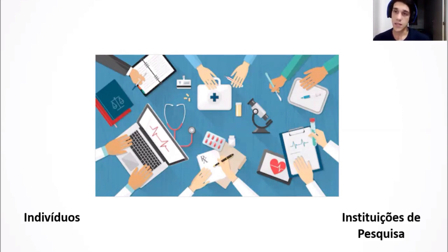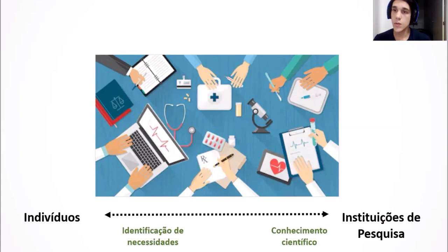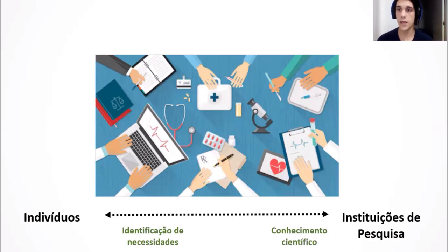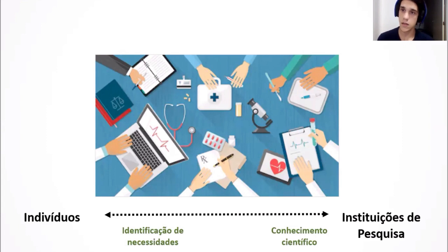Tem também as instituições de pesquisa, e essas têm um papel direto e indireto. O papel indireto chamamos também de pesquisa básica. Vamos imaginar a Dona Maria — ela tem artrite. A artrite da Dona Maria vai servir de objeto de estudo para instituições de pesquisa como as universidades, com o objetivo de entender como a artrite funciona, como ela aparece, qual é o seu desenvolvimento, quais são os tratamentos, se são eficazes, quais são as opções de novos tratamentos. Ao mesmo tempo que a instituição produz conhecimento científico sobre a doença, ela também identifica as necessidades do paciente.